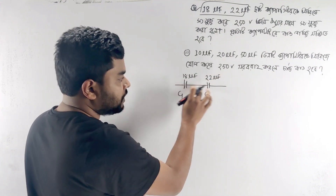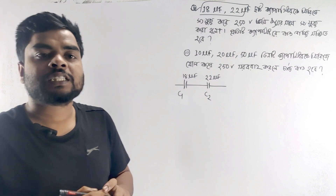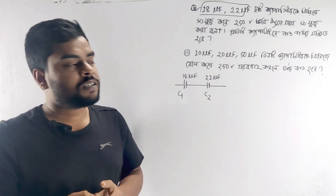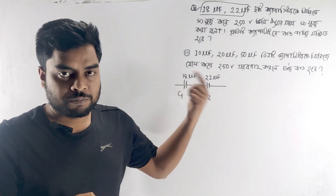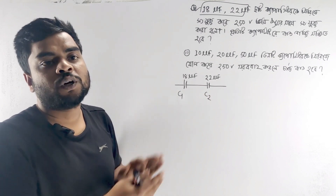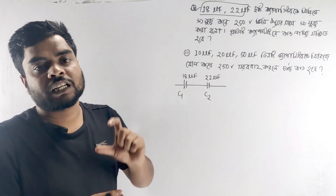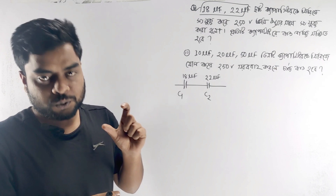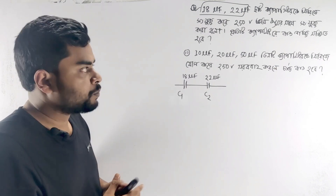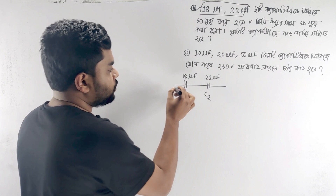If you have a series, you will know that the capacitor is in parallel. A series means the capacitor is in parallel. If you have a parallel, you will have a similar point. That is a series. A parallel is a different way.